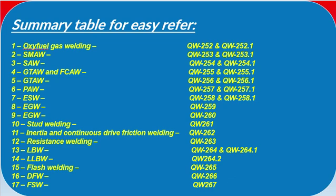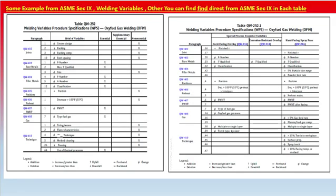You can see here just one example from ASME Section IX welding variables. Other variables you can find directly from ASME Section IX in each table. For example, table QW-252 covers welding variables for procedure specification (WPS) for oxy-fuel gas welding, and QW-252.1 is a separate related table.